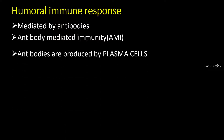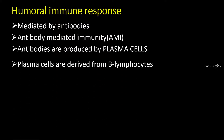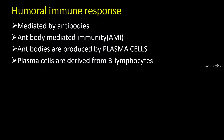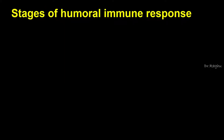These antibodies are produced by cells called plasma cells, and these plasma cells are derived from B lymphocytes, which are lying dormant in the lymphoid tissue. A foreign antigen comes and activates these B lymphocytes. The B lymphocytes get converted into plasma cells, and then the plasma cells produce the antibodies.